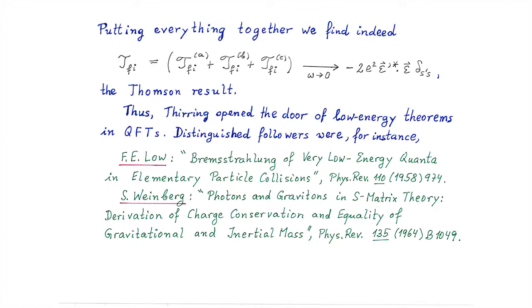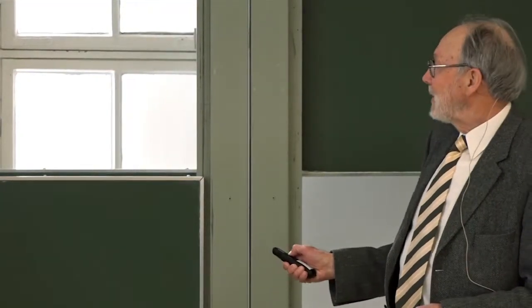If you combine now everything, you get the theorem that to all orders this Compton scattering in the limit of zero energy of the photons is given by minus 2e squared epsilon prime times epsilon delta ss prime. No higher order corrections. This is the Thomson result. In this way, Thirring opened the door of low energy theorems in quantum field theory at the age of 23. Distinguished followers were Francis Low with his famous paper which appeared in 58, and the very remarkable paper by Steven Weinberg on photons and gravitons in S-matrix theory.